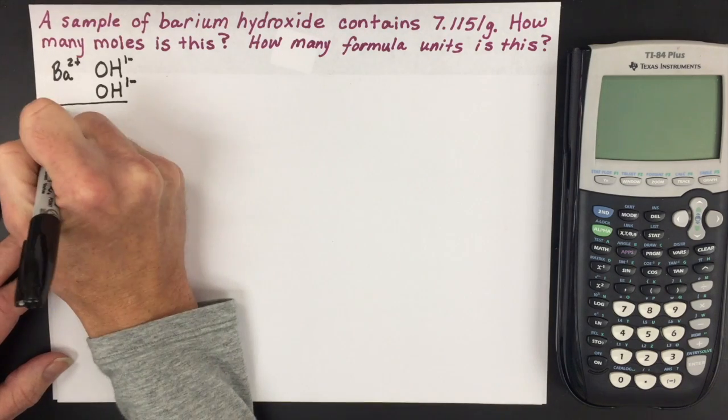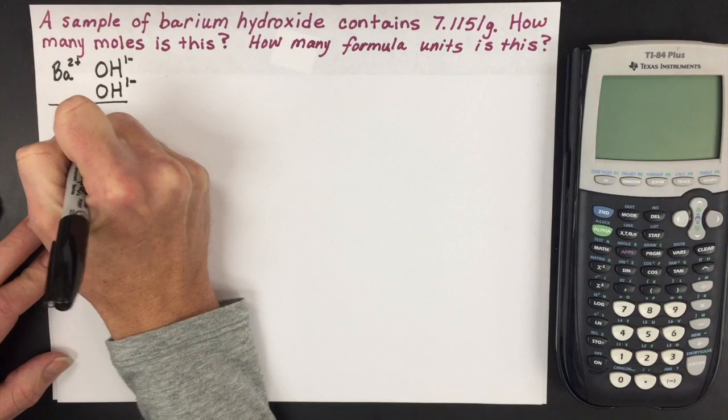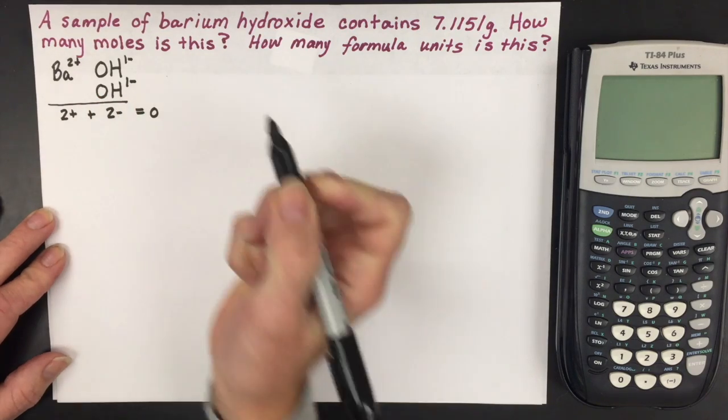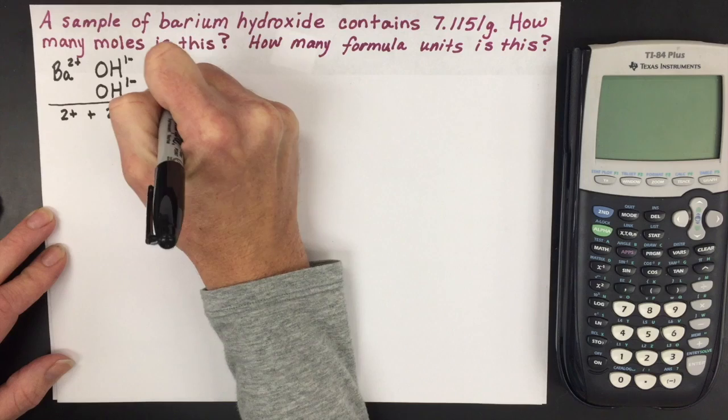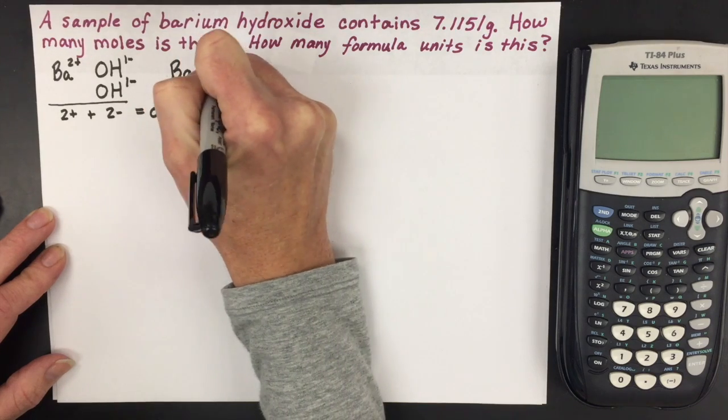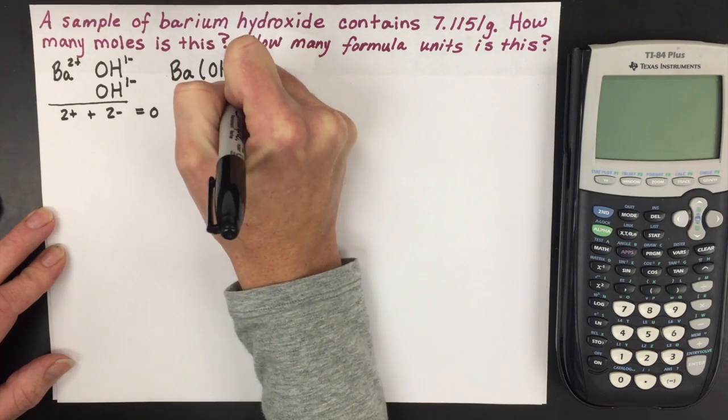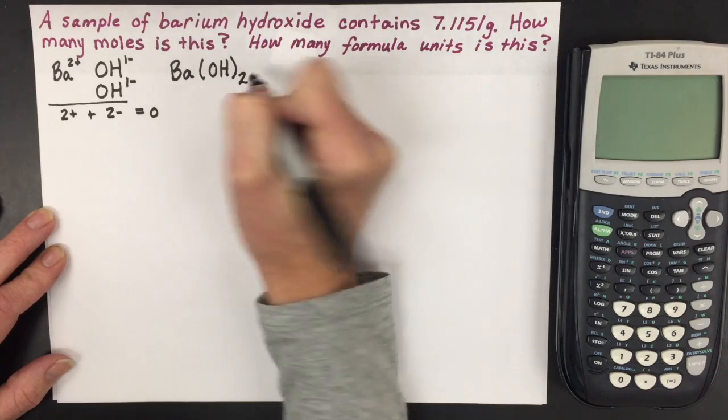The goal here is that the positive charge adds up with the negative charge to equal zero. So for the compound, you'd write it as Ba(OH)₂ because we're going to need more than one of that polyatomic ion.